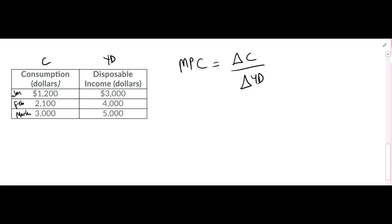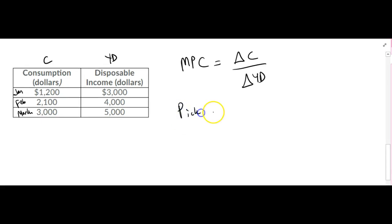You can pick any two months. It doesn't matter whether you choose January and February or January and March or February and March. You'll always get the same results. So let's go and choose January and March. We want to find out within that time period how much is the change in consumption, how much is the change in disposable income and plug it in here to get the MPC number.